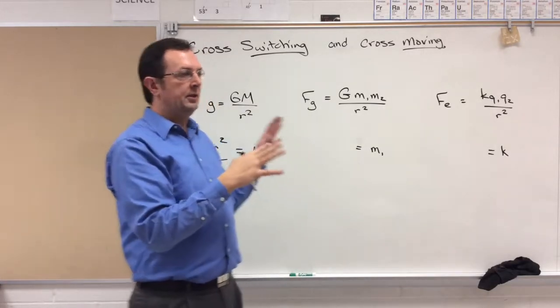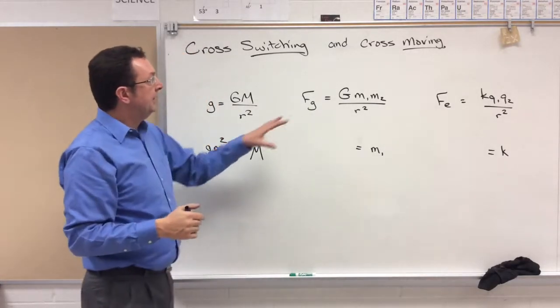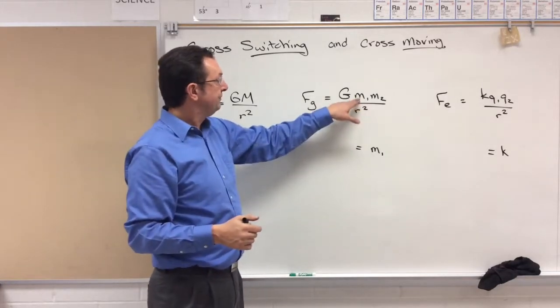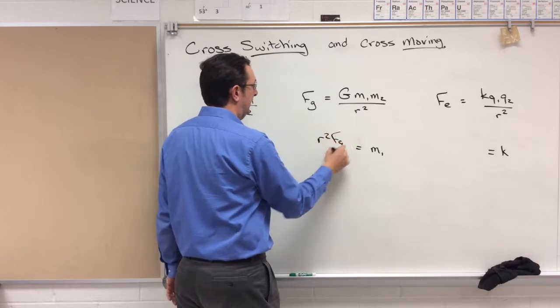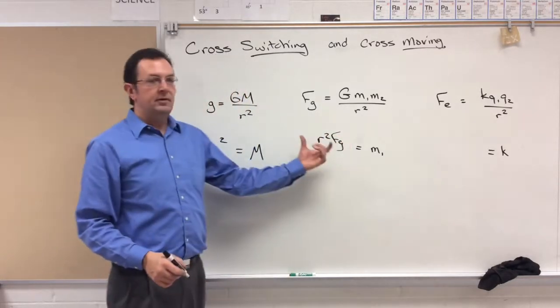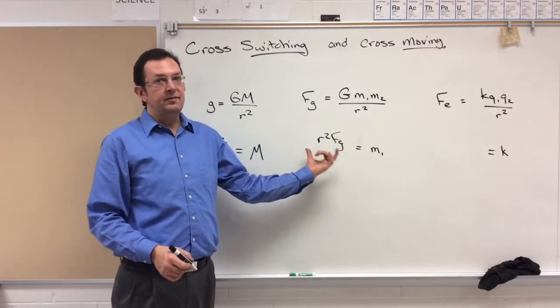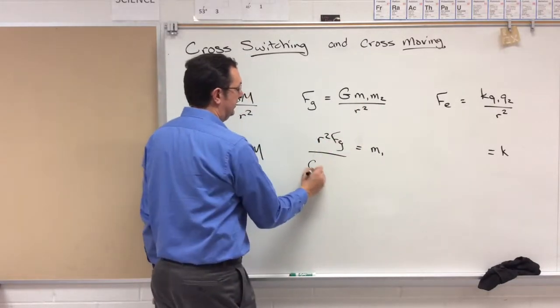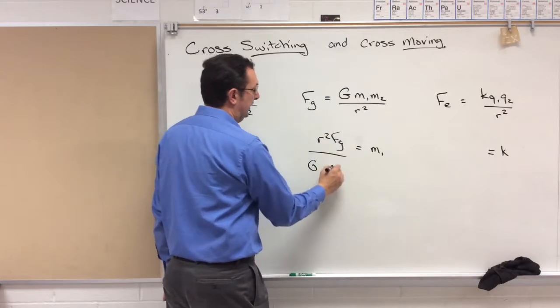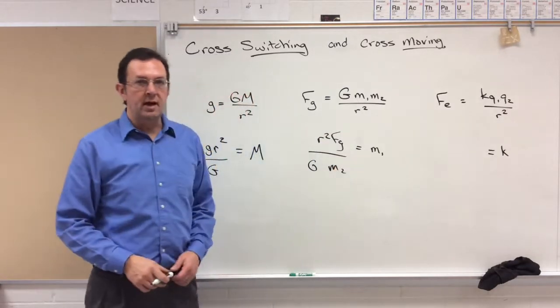The G moves to the denominator. So cross switching numerator to denominator and denominator to numerator, cross moving, cross switching, doing whatever you need to. And the M1, solving for that again, you take the R squared F sub G. Notice that multiplication is commutative, so I can place this in any order I want to. And that M1, take the G, move it to the denominator.